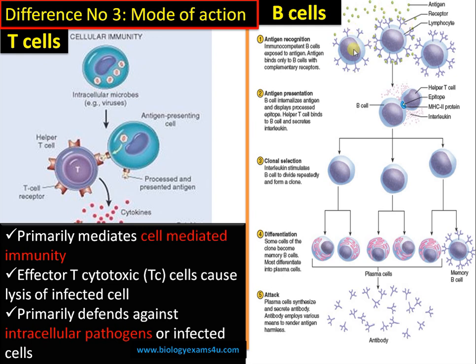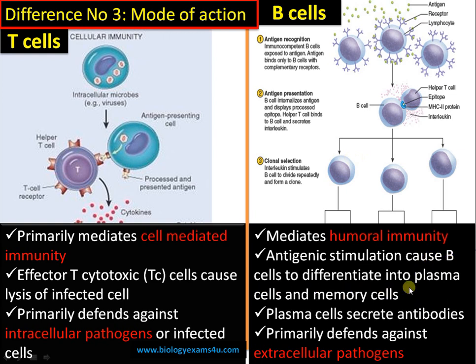In the case of B cells, upon antigen recognition, B cells bind to a particular antigen, degrade it, and present it to helper T cells on MHC. Helper T cells then activate B cells for clonal selection, causing the B cell to divide and form large numbers, then differentiate into two types: plasma cells, involved in antibody formation, and memory cells, involved in immunologic memory. These antibodies neutralize the pathogen. B cells are involved in humoral or antibody-mediated immunity, primarily defending against extracellular pathogens.